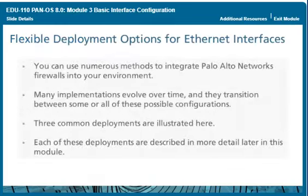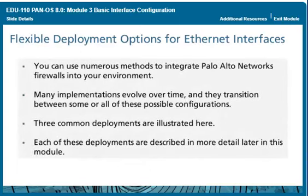You can use numerous methods to integrate Palo Alto Networks firewalls into your environment. Many implementations evolve over time and transition between some or all of these possible configurations. Three common deployments are illustrated here, each described in more detail later in this module. A brief overview of Tap, Virtual Wire, and Layer 2 features follows.